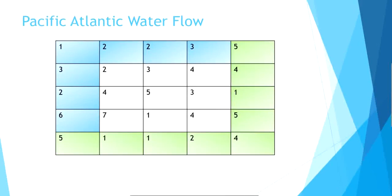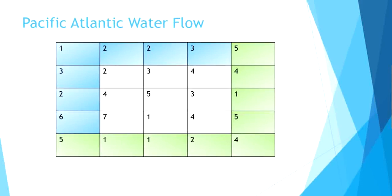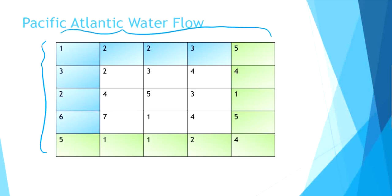The question is to find the coordinates where water can flow to both the oceans. Start filling the cells that can be covered by Pacific Ocean in blue color. All the cells towards the left side and top of the continent are covered with Pacific Ocean. From the top cell which has height 1, water can flow to the down cell. The same way from 2 to 3 the water will flow, and from 3 to 4. Also 5 is a common cell between Pacific Ocean and Atlantic Ocean, so the water from 5 can also flow to 4.